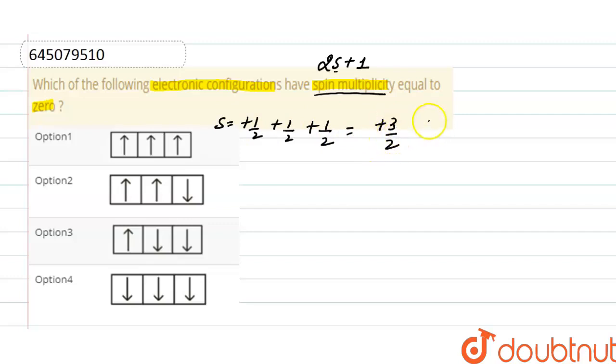And the spin multiplicity will be 2 into 3 by 2 plus 1, that is 4.